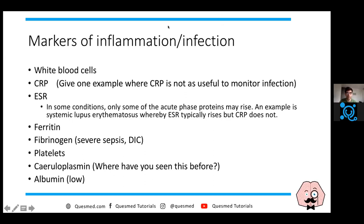Let's talk about interpreting blood tests - specifically markers of inflammation and infection. White blood cells are very important. If very, very raised, it may be consistent with lymphoma or chronic lymphocytic leukaemia in elderly patients. CRP is C-reactive protein. Does anyone know instances where CRP is not very useful? Post-operatively is absolutely correct.